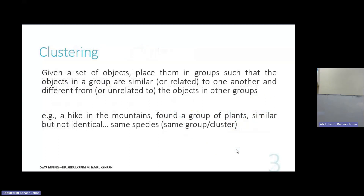Clustering: given a set of objects — data points, records — place them in groups such that objects in a group are similar or related to one another, and different from objects in another group. You need to assess how similar the data points are in order to decide how to cluster them, how to assign them into different clusters.